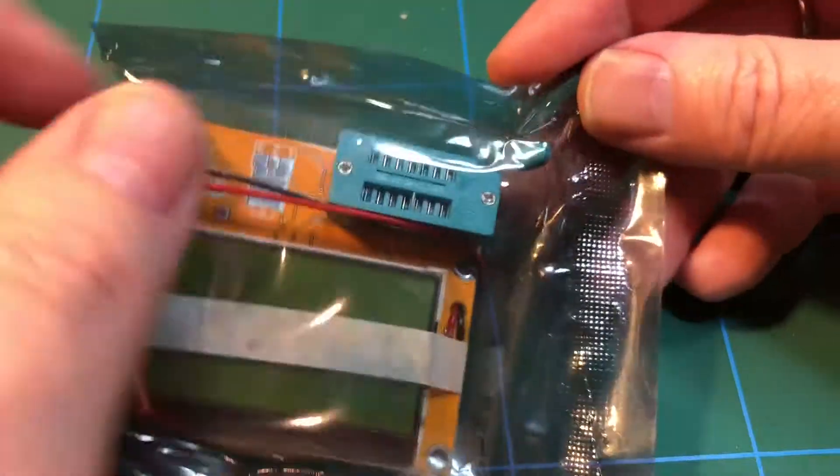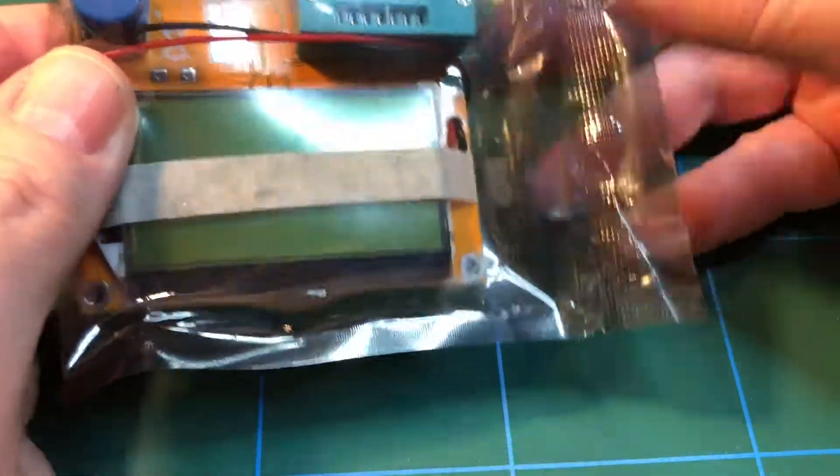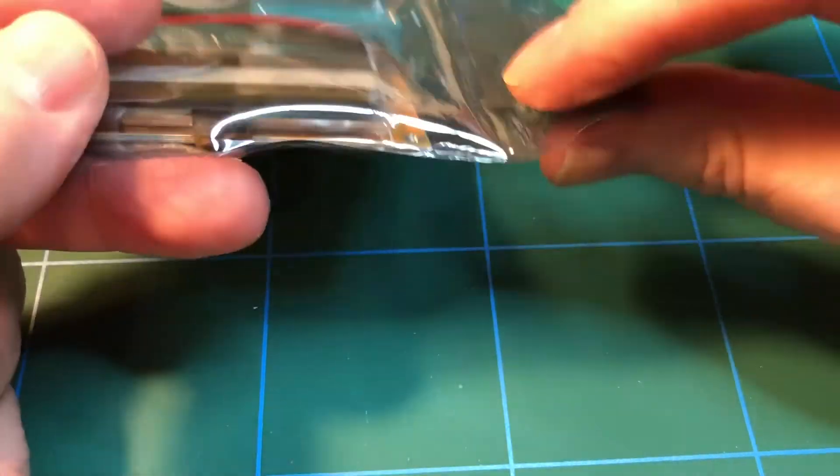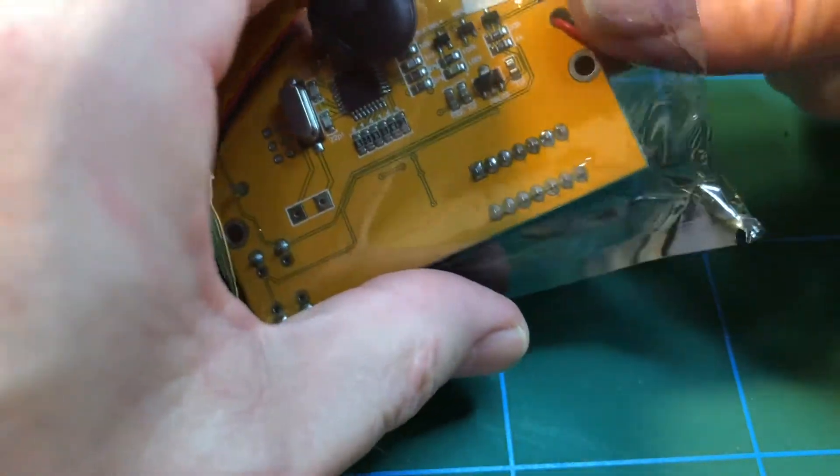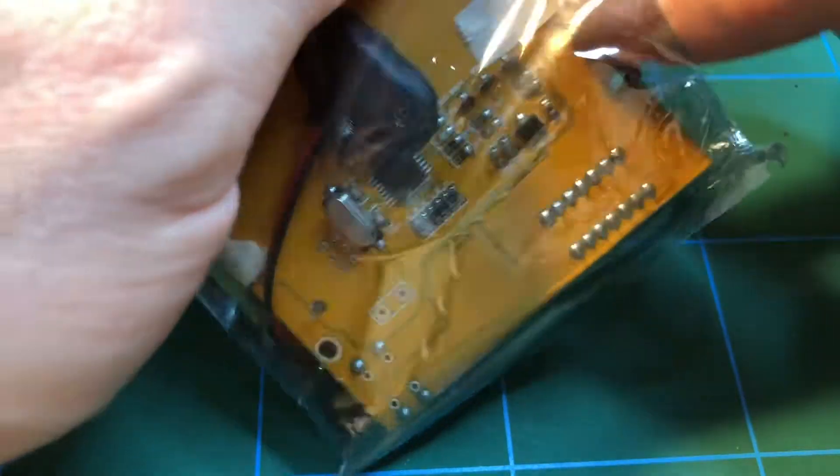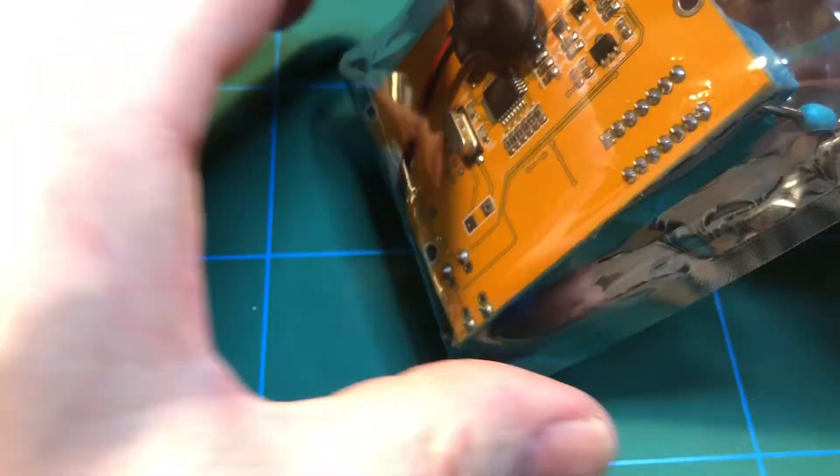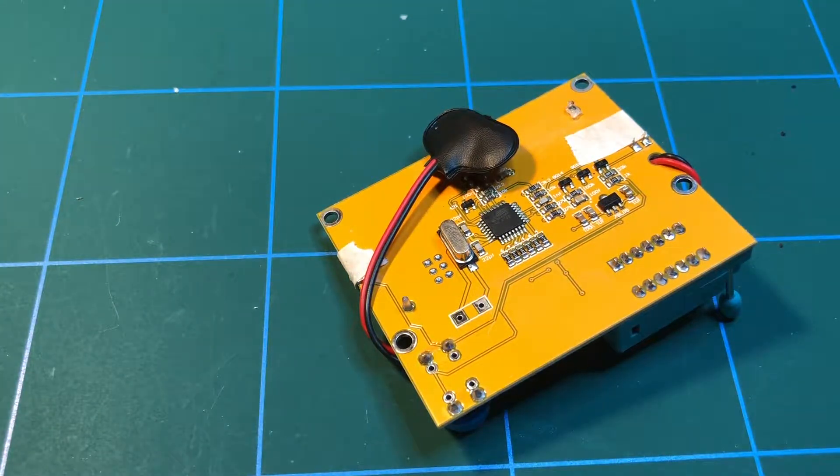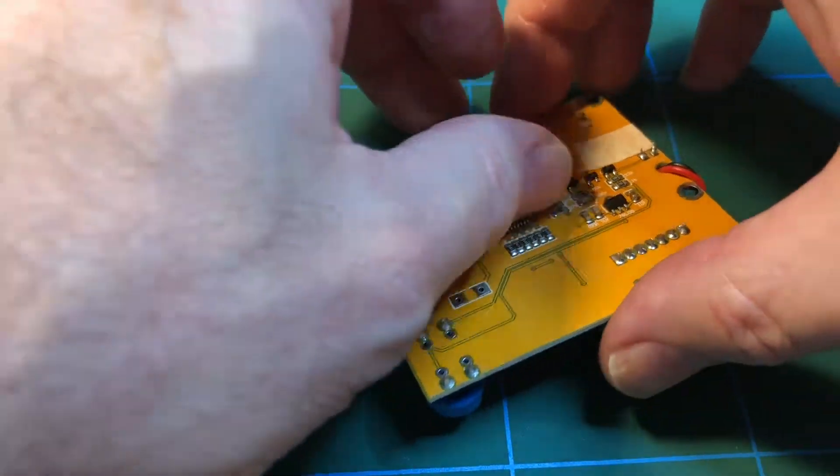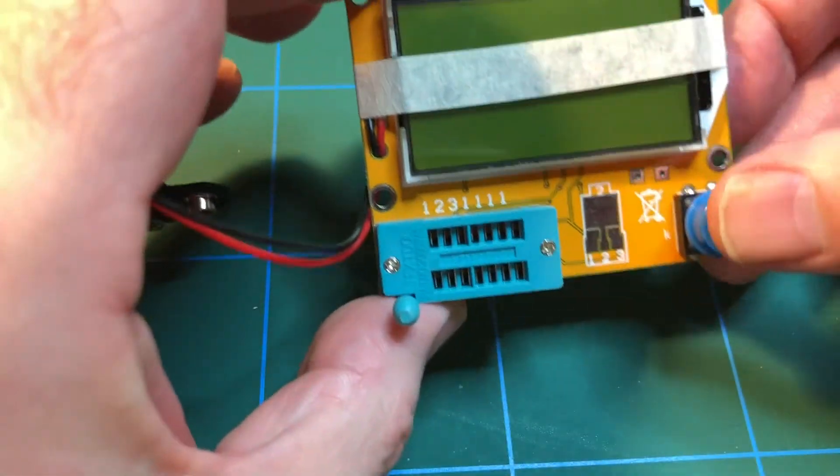You plug them into these slots here and it should tell you on the screen what the value is. Now I do use a multimeter, an ordinary multimeter, but I thought that this would be an interesting alternative for those times when you just need to double check the value of a particular component, which I have had need to do on quite a few occasions. And yeah, here it is.